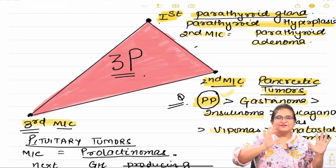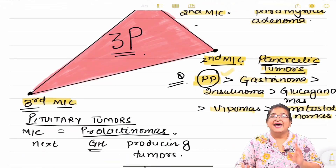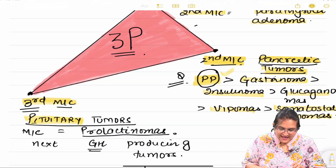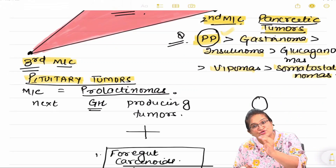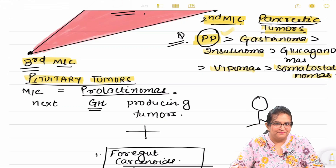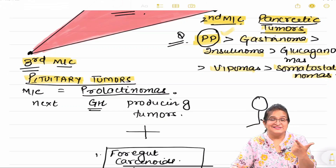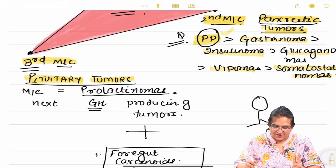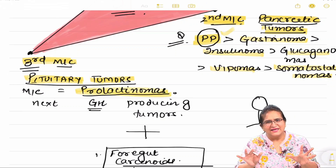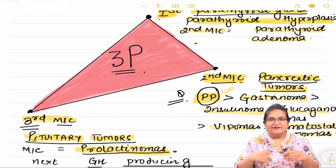Now coming to the third part of the pink diagram — the last one is very far off and that is the third most common site, which is the pituitary. Pituitary tumors are the third most common tumors occurring in MEN 1. The most common pituitary tumors occurring in MEN 1 are prolactinomas.